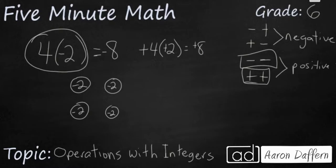And then finally, what happens if I have negative four times negative two? Look at our key over here. Two negatives always makes a positive. So really, negative four groups of negative two is going to make positive eight.